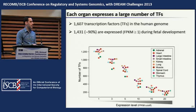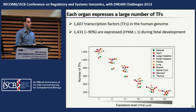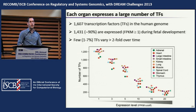As shown in this plot — each organ in a different colored dot, displaying the total number of transcription factors expressed at varying expression level cutoffs — each organ expresses a very large number of transcription factors. At a fairly low threshold of FPKM of 1, each organ expresses over a thousand of these transcription factors. At least with the time points sampled, very few are temporally active: only 1 to 7% vary more than two-fold over the time scales we have.